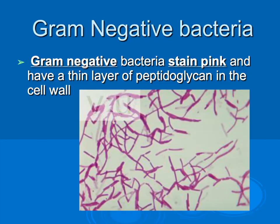Here we have Gram negative bacteria, and Gram negative bacteria stains pink. It stains pink because the cell walls are much thinner — the peptidoglycan layer is thinner and therefore cannot hold the purple stain. Remember that bacteria come in three shapes: the bacillus, the coccus, and the spirillum. Clusters are staphylo, while chains are strepto. Here we have a chain of bacteria; they are rod-shaped, so we would have a streptobacillus — and Gram negative.